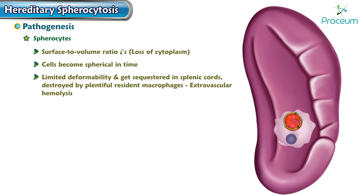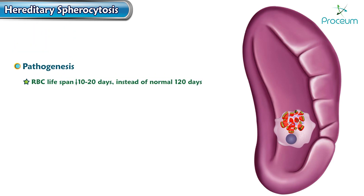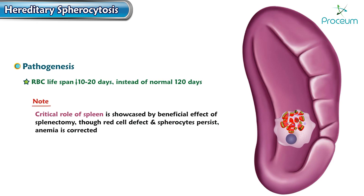Spherocytes have limited deformability and hence get sequestered in the splenic cords, where they are destroyed by the plentiful resident macrophages, resulting in extravascular hemolysis. The RBC lifespan is thus decreased to 10 to 20 days instead of the normal 120 days.